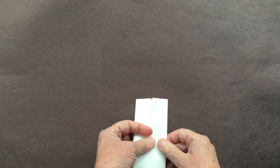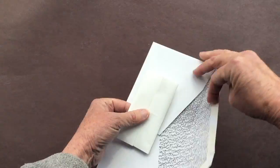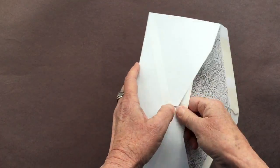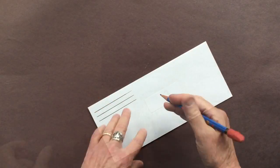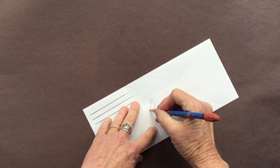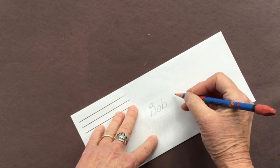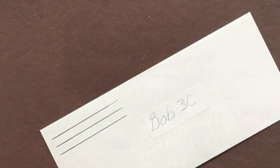My advice is to fold up what you have, put it in an envelope, and write your name and class code on it so you can put it in your table folder and save it for another time when you're ready for a fresh start.